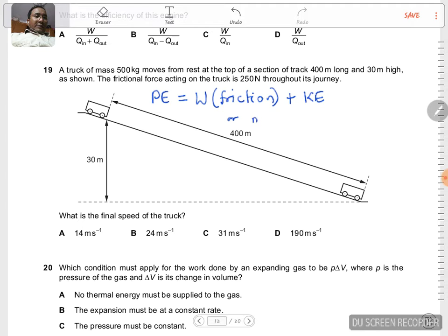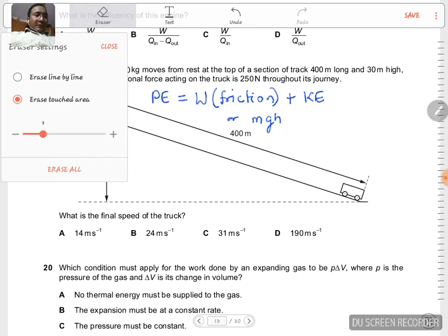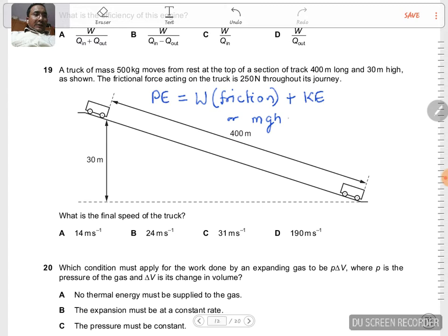MGH equals work done against friction, which is frictional force into distance, plus KE increase, which is 1/2 MV squared, where V is the velocity at this end.